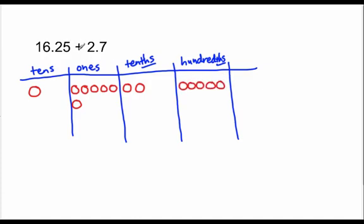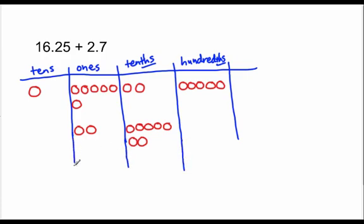I'm putting this together with two ones and seven tenths. I count up the hundredths: one, two, three, four, five hundredths — I write a five here. Now I count up my tenths: one, two, three, four, five, six, seven, eight, nine. I have nine tenths.